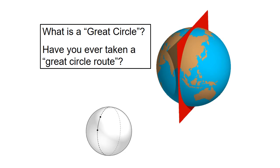One purpose of the Mercator projection is that a line drawn on it is a line of constant compass bearing — but that's not always the most direct route. The shortest distance between any two points on the globe is what's known as a great circle or great circle route. If you have an origin point and a destination, and you pass a plane through the center of the globe, the intersection with the globe's surface traces a great circle — the shortest distance between those two points.